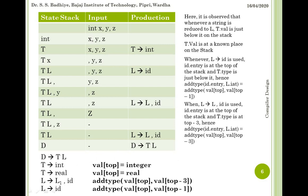The key point is that whenever a reduction takes place, there is a predetermined place on the stack where the values of these attributes are stored. This scheme works only if the grammar is defined in a way that allows the position of the attributes to be predicted; otherwise, this method is not feasible. The resulting translation scheme becomes: D derives to TL; T derives to int with value of top equals integer; T derives to real with value of top equals real; L derives to L1 comma id with addtype(value of top, value of top minus three); L derives to id with addtype(value of top, value of top minus one).